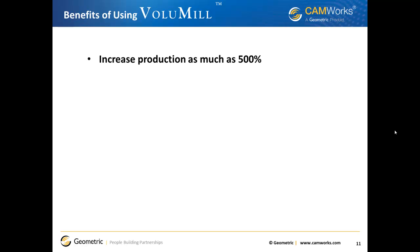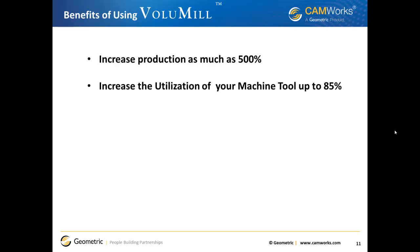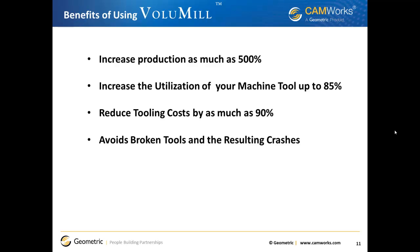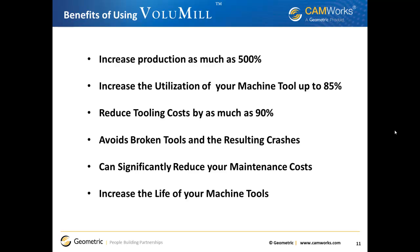What are the benefits of using Volume Mill? You can reduce your cycle times by more than 80 percent and increase your production by as much as 500 percent. You can increase the utilization of your machine by as much as 85 percent while at the same time reduce your tooling costs by as much as 90 percent. You can avoid broken tools and machine collisions, significantly reduce maintenance costs, and dramatically increase the life of your machine tool.